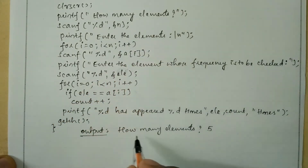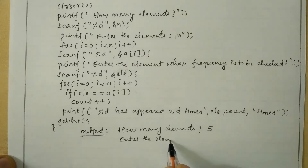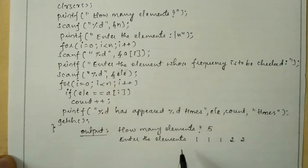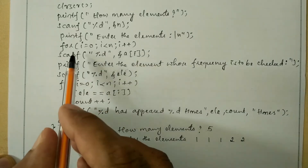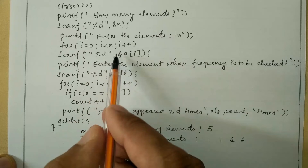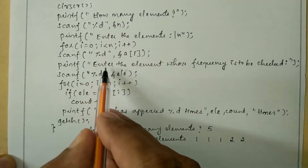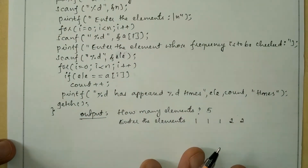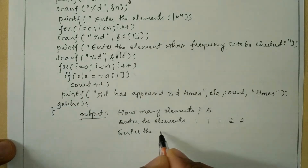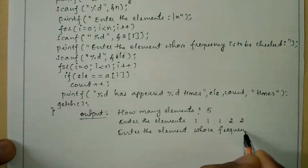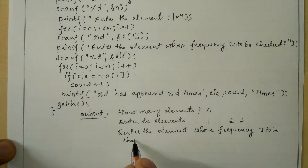Next it is going to ask the user to enter the elements. So I enter 1, 1, 1, 2 and 2. Once I enter the 5 elements and press enter, through the for loop we receive one number at a time through the scanf statement. Next it asks the user to enter the element whose frequency is to be checked, and it prints "Enter the element whose frequency is to be checked".